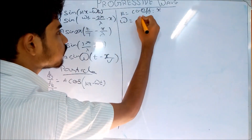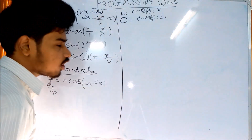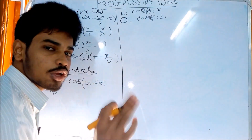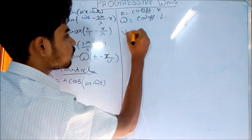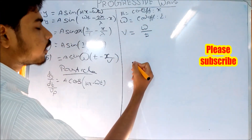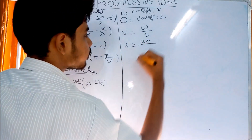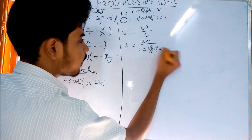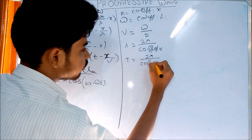Angular frequency (ω) is determined from the coefficient of t in the wave equation. Wavelength (λ) equals 2π divided by the coefficient of x. The time period T is found from the coefficient of t.